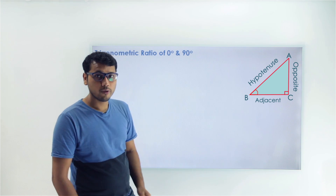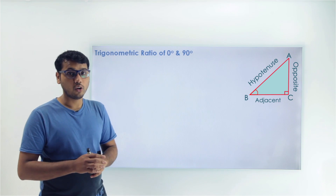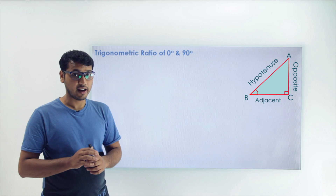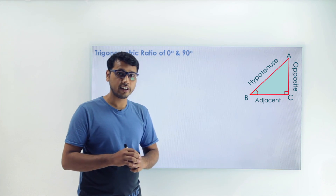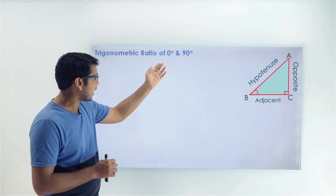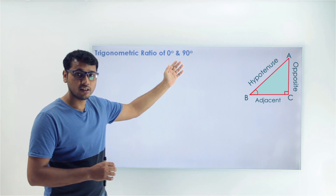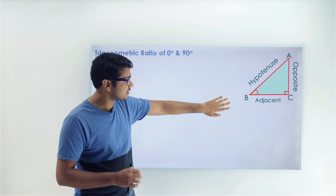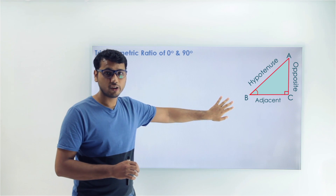Now since we have located the hypotenuse, opposite, and adjacent, the next step is to locate either angle 0 or angle 90. So can you make this angle B equal to 0 somehow?